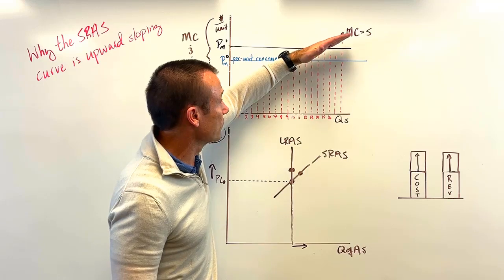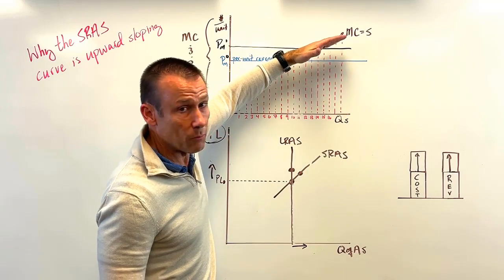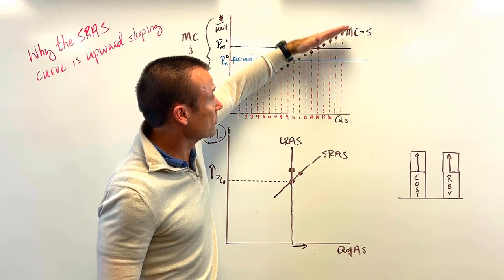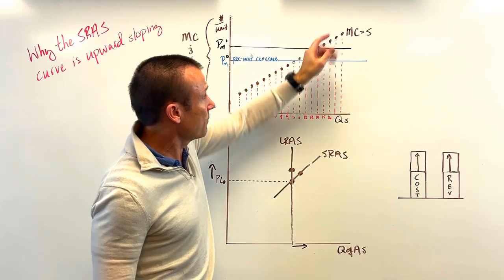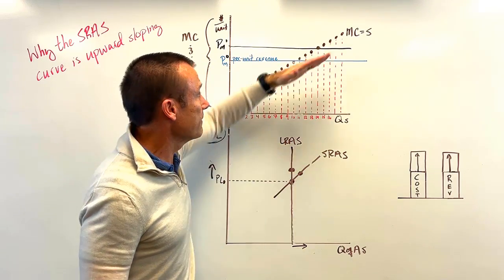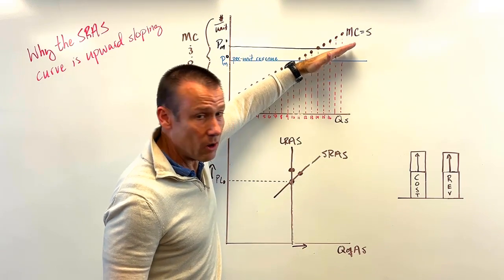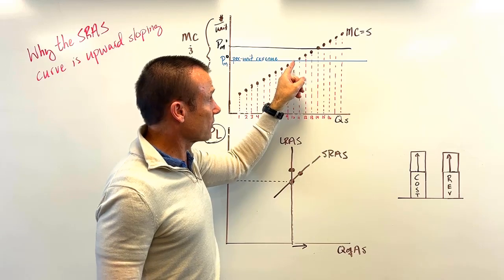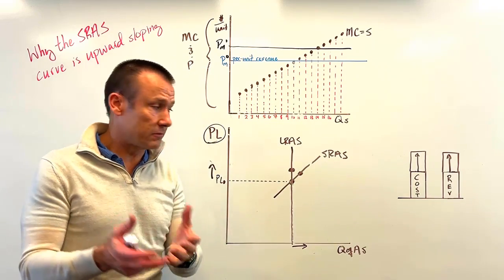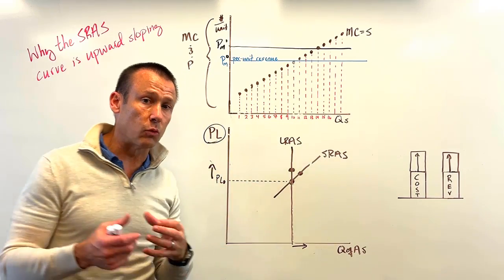If the marginal cost of a good goes up — if it's now more costly to produce — marginal cost shifts up and supply shifts left. If marginal costs go down, the supply curve shifts to the right. The same logic applies to the aggregate supply curve: what shifts it is the cost of production.